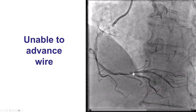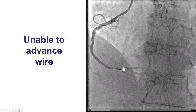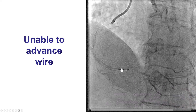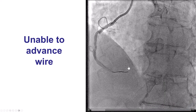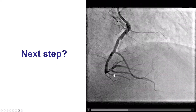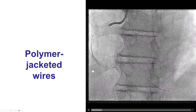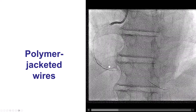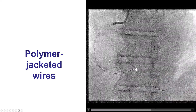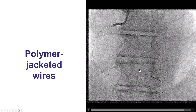We had some challenges — the first one was wiring the lesion. It was very eccentric and highly stenotic. A workhorse wire did not go. We tried different projections. There is almost an ulceration in that lesion. So what we ended up doing is using a polymer-jacketed wire — a C-on-black — to go into the PDA, and then also using a C-on-black to get into the right posterior lateral, which was successfully achieved.